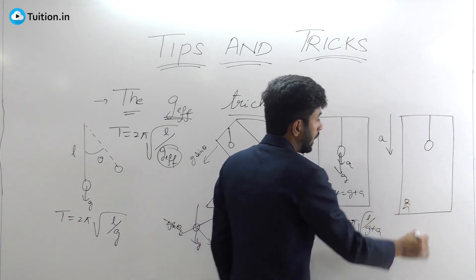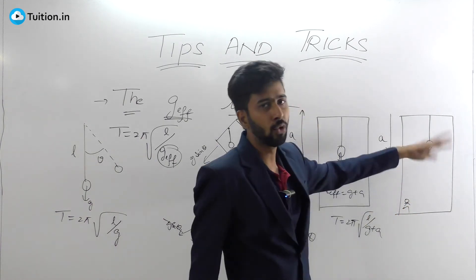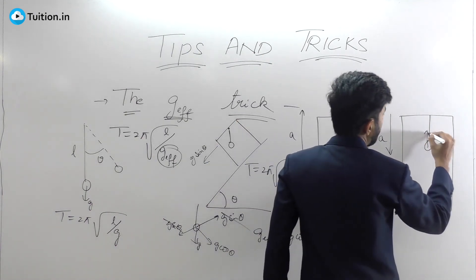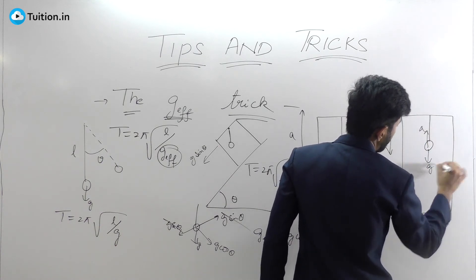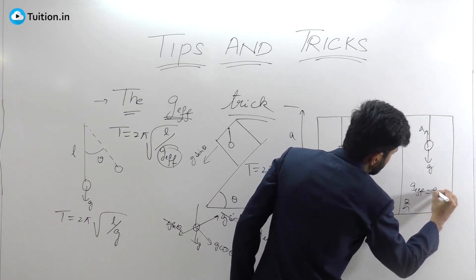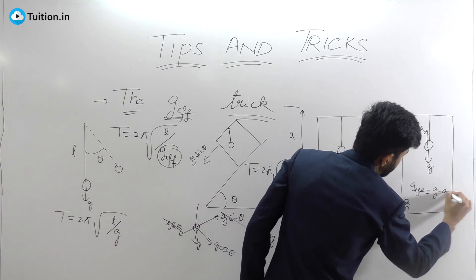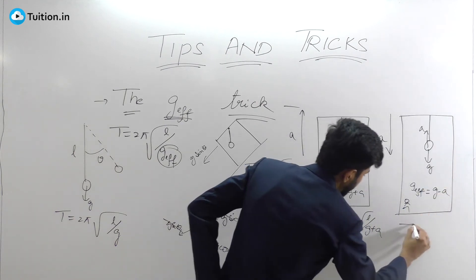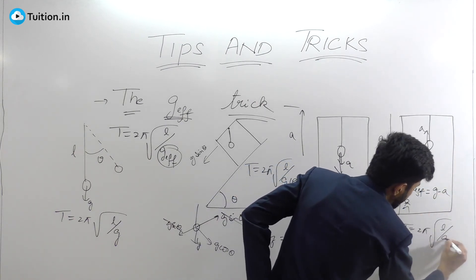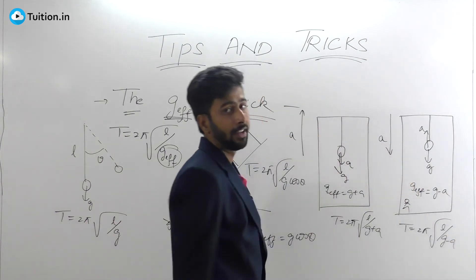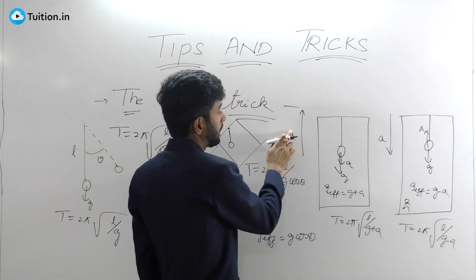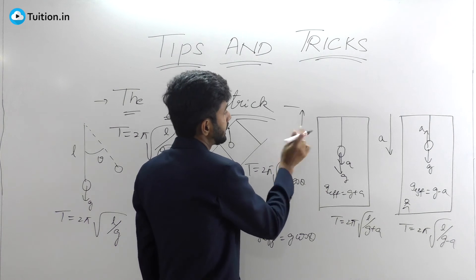Now let's look at the case where the lift is going down with acceleration a. In the frame of the lift, you apply a pseudo force upward, giving acceleration a upward and g downward. So your g-effective is g − a, and the time period is T = 2π√(l / (g − a)).